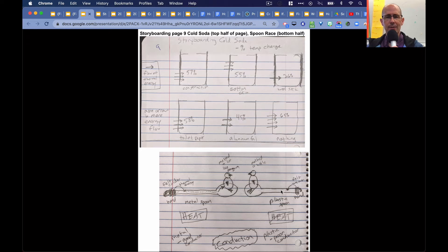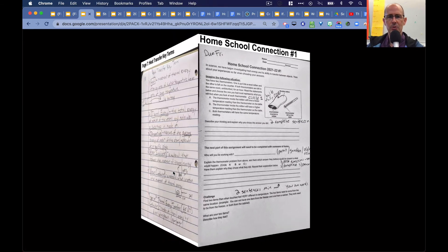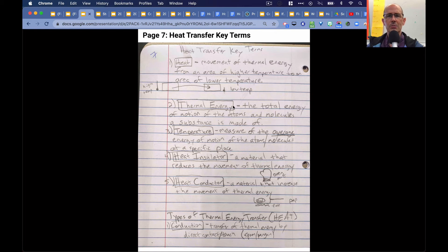And then we had to figure out, okay, what was causing that? So, again, we looked at our key terms. Let's go back to our key terms on page 7. Heat is the movement of thermal energy from an area of higher temperature to an area of lower temperature.